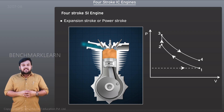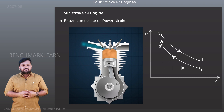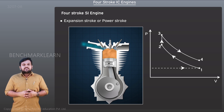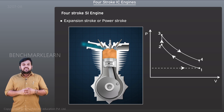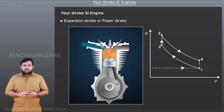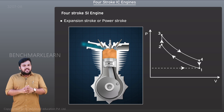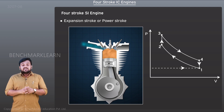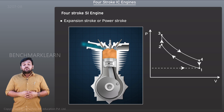The piston moving downwards rotates the connecting rod, which in turn rotates the crank, delivering the required power. When the piston resides at the bottom dead center, heat is liberated during process four to one. It is to be noted that this is a constant volume heat removal process.